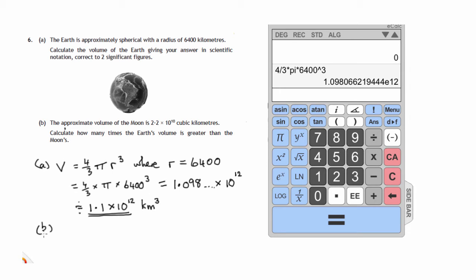So we would divide the volume of the earth by the volume of the moon to get our answer. So part B, we take the volume of the earth and divide it by the volume of the moon. The volume of earth we know is 1.1 times 10 to the power 12, and the volume of the moon we're told is 2.2 times 10 to the power 10.